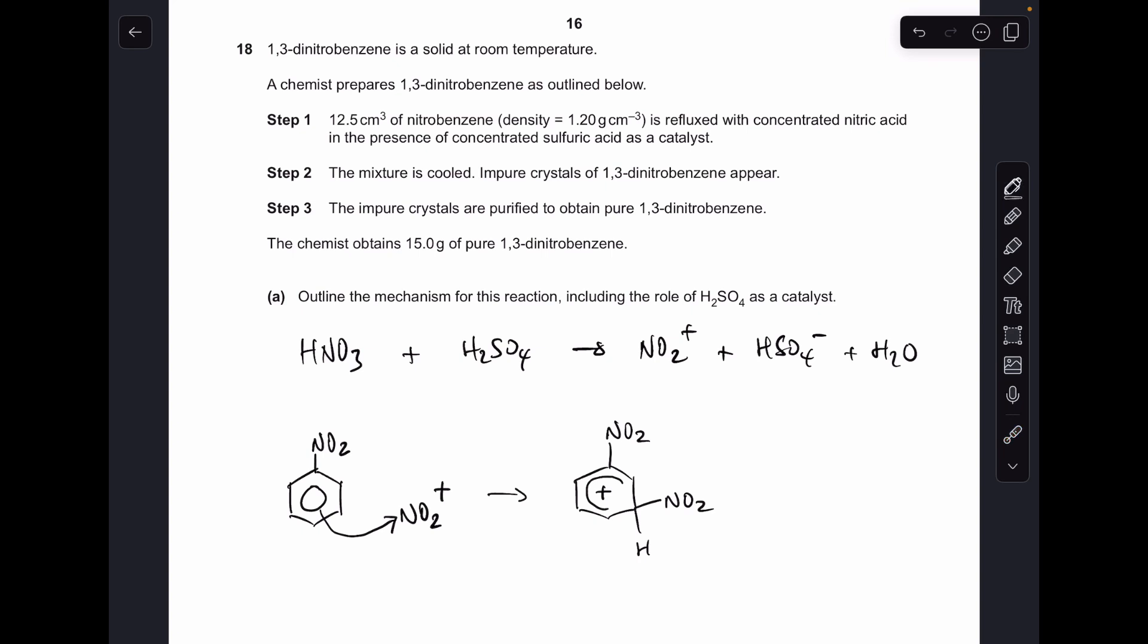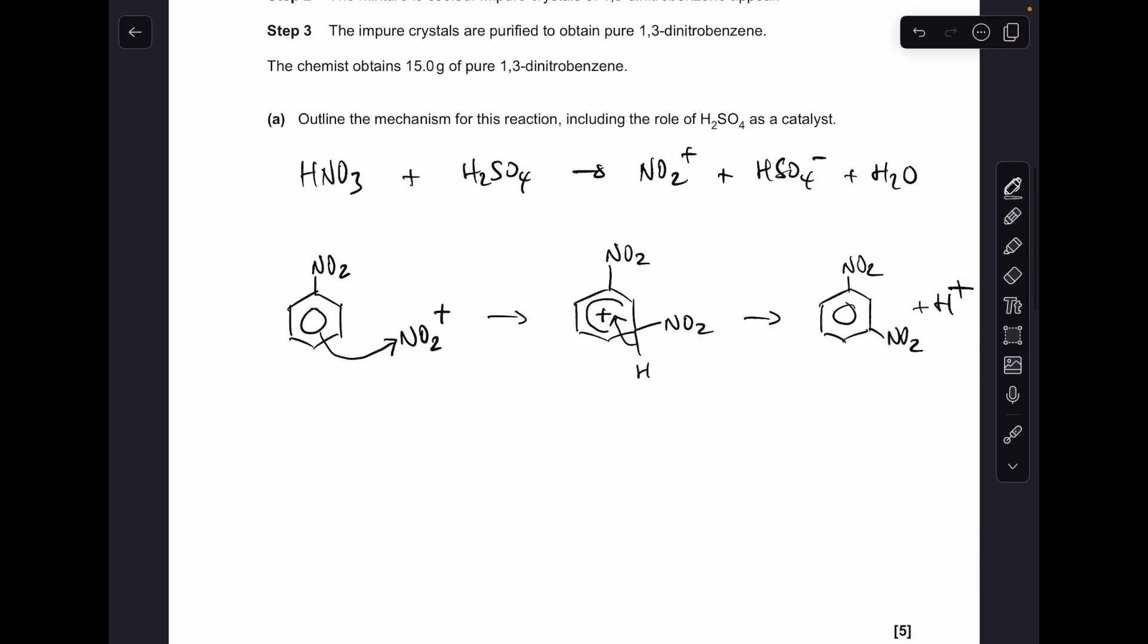So what happens next is a pair of electrons from the C-H bond go back in to reform the delocalised ring of pi electrons. So this H is going to come off the ring as an H plus ion. So we get those products there and then all we need to do is reform the catalyst. So we take that H plus ion that we've just made, take the HSO4 minus ion from step one, put them together and there's your catalyst back. Sulfuric acid.